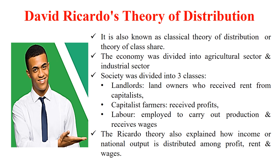The capitalist farmers received the profit and they employed laborers for their agriculture production on their farms. In return, the laborers received the wages. So Ricardo also explained how income or national output is distributed among profit, wages, and rent. We will discuss this theory in detail in this lecture session.